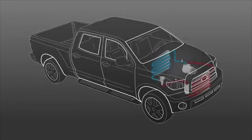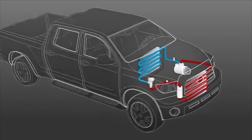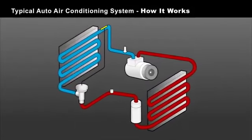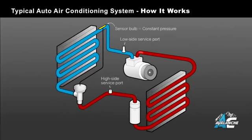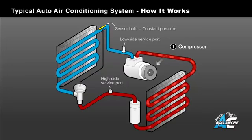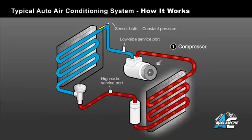We have designed a basic auto air conditioning system diagram to show you the flow of refrigerant throughout the AC system. The compressor is the workhorse of the system and is where we'll start. It receives cool low pressure gas which is compressed into a high pressure high temperature gas and pumped out of the discharge side of the compressor and flows into the condenser.